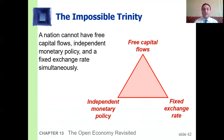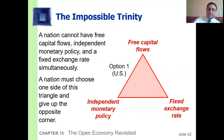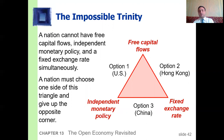A nation must choose one side of this triangle and give up the opposite corner. For example: the United States has free capital flows and independent monetary policy. Hong Kong has free capital flows and fixed exchange rates. China has independent monetary policy and fixed exchange rates.